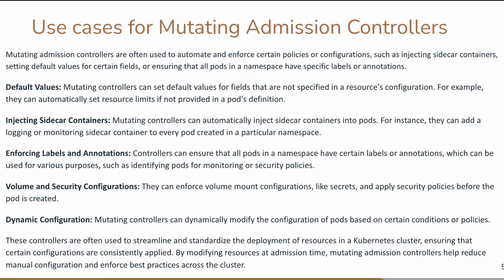Next is injecting sidecar containers. We already discussed this with the Elasticsearch cluster example — you no longer have to specifically define the logging sidecar container in your configuration. The mutating admission controller can automatically add the labels and make sure they are applied for pushing logs from the pod to the Elasticsearch cluster. Similarly, for monitoring, if you want certain labels for Prometheus to scrape metrics from a pod, the injection of the sidecar can be taken care of by the mutating admission controller.